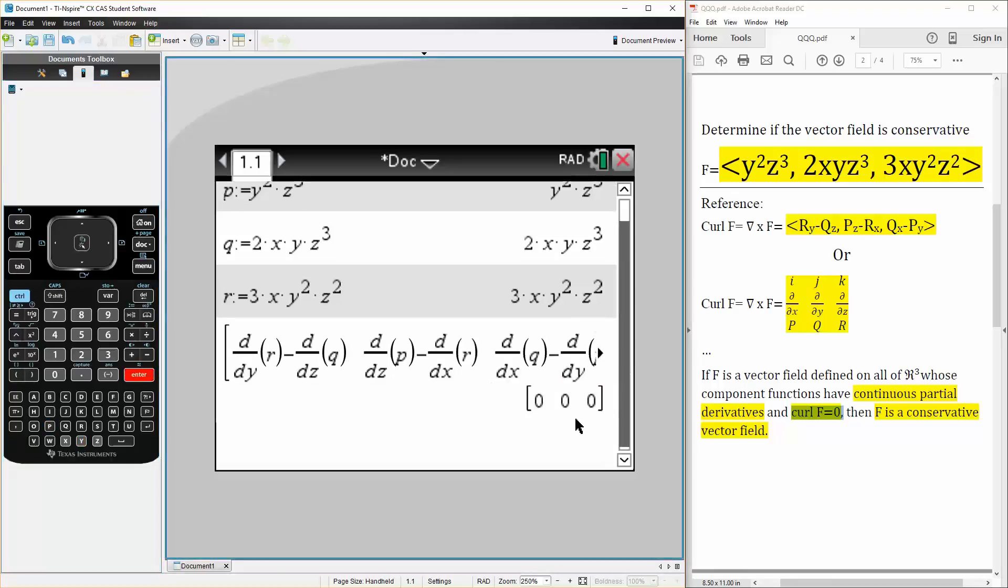If we hit enter we get [0, 0, 0]. So our curl would therefore be 0. So we can therefore say yes, vector field is conservative. And that's all we need to do.